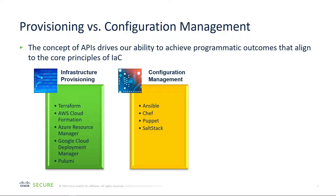For infrastructure provisioning, think of tools like Terraform, AWS CloudFormation, Azure Resource Manager, Google Cloud Deployment Manager, and Pulumi. For configuration management, there's Ansible, Chef, Puppet, and SaltStack. Infrastructure provisioning is about building the core infrastructure to support the services you're going to deliver to the business, while configuration management configures the nuances within the services themselves.